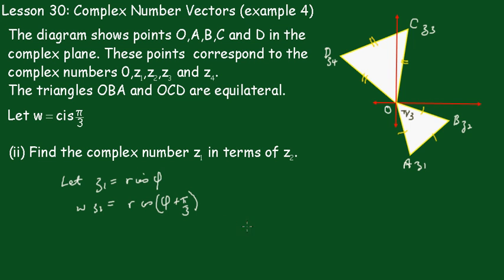And further, we know that Z2 must be equal to R cis φ plus π upon 3. There's φ plus π upon 3 moving in this direction.